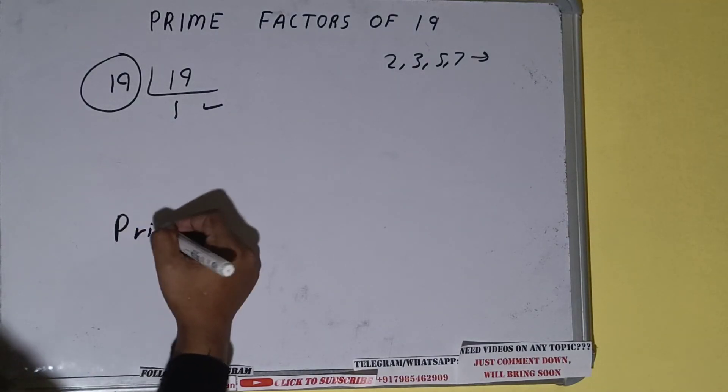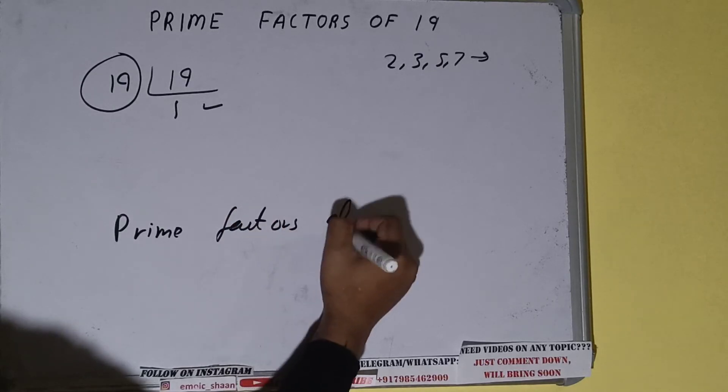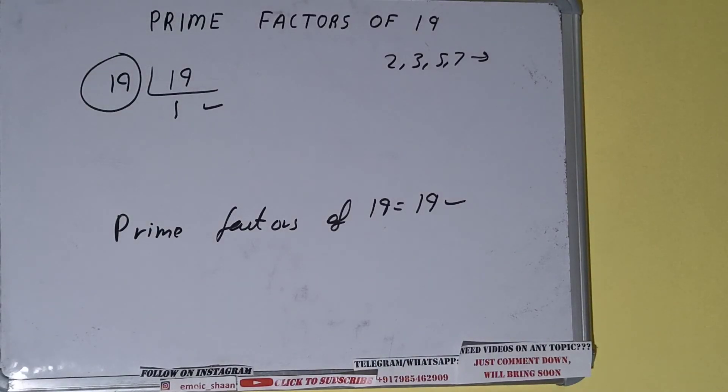So we can say that prime factors of 19 will be the number itself, that is 19. That will be the answer. So this is all.